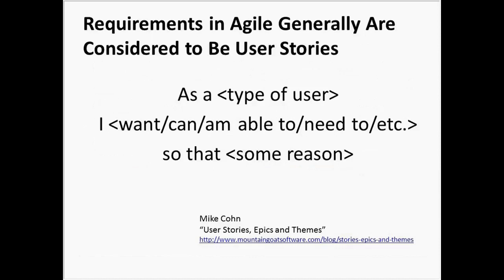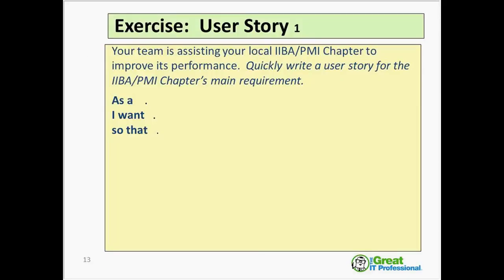Many of you are probably familiar with the general format that Mike Cohn introduced for documenting user stories. In agile, user stories are the vehicle for requirements. The typical format is: as some kind of a user, I want or need something, so that I can get some benefit. This is a pretty important and understandably popular format because it's a three-liner — and who could argue with three lines, especially if you've been accustomed to something more complex.